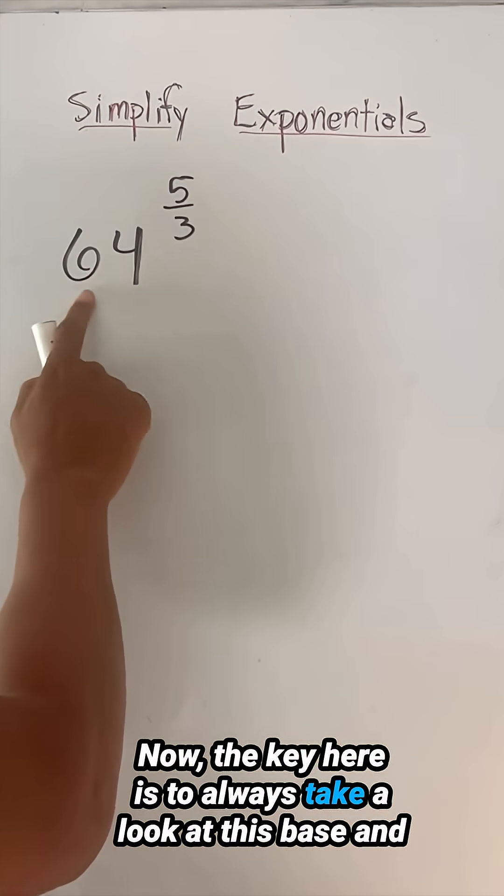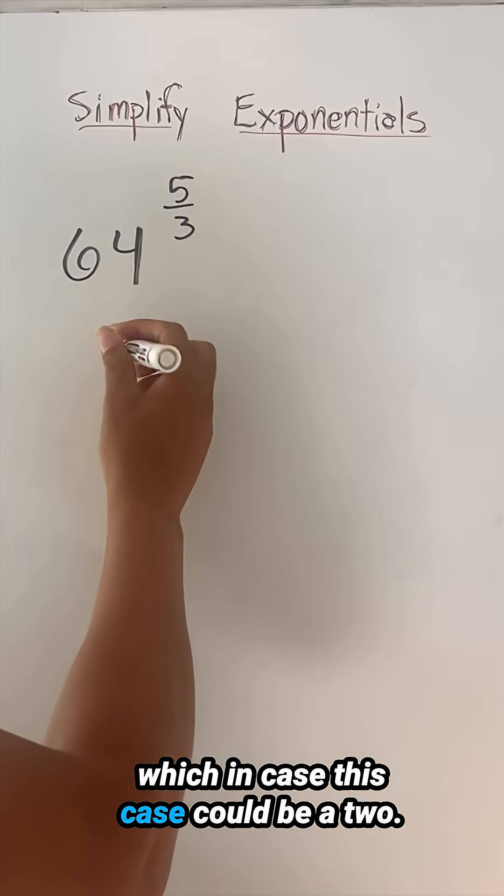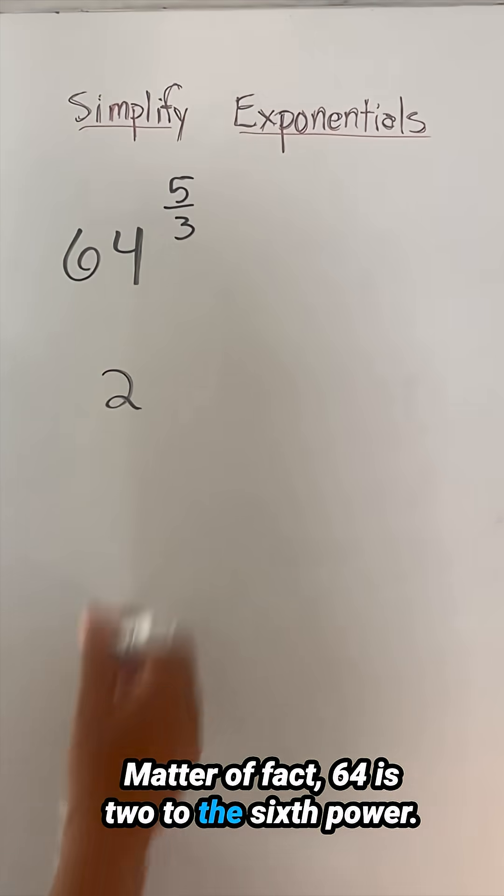Now, the key here is to always take a look at this base and you want to get it to its lowest term, which in this case could be a two. As a matter of fact, 64 is two to the sixth power.